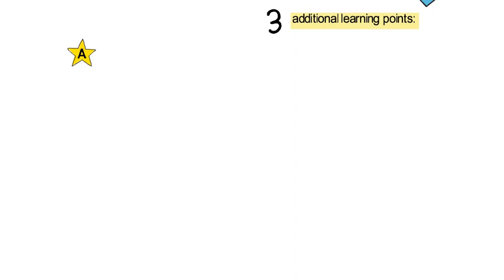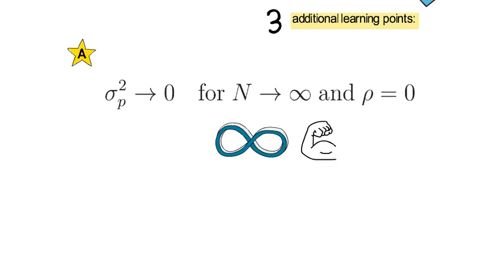Number A. Portfolio risk approaches zero as we increase the number of assets if none of the assets co-moves with the other assets. Now that again highlights the unlimited power of diversification for assets that share no common risk.